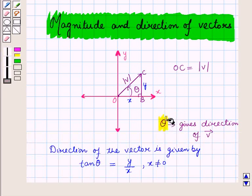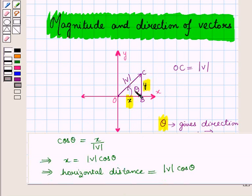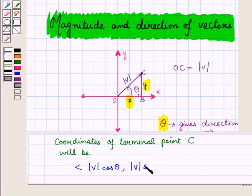Now if we know the angle theta, we can find the horizontal and vertical components of the vector using trigonometric ratios. We know that sin theta equals perpendicular over hypotenuse, so in this triangle sin theta equals y over the magnitude of vector v, and from this we obtain the vertical component y equals the magnitude of vector v times sin theta. Similarly, cos theta equals x over the magnitude of vector v, and from this we obtain the horizontal component x equals the magnitude of vector v times cos theta. So the coordinates of the terminal point C will be (|v| cos theta, |v| sin theta).